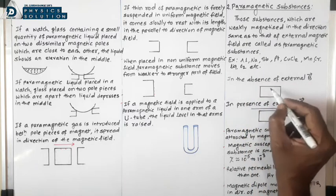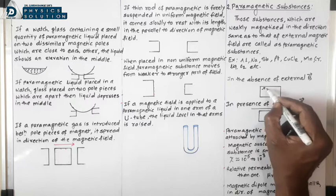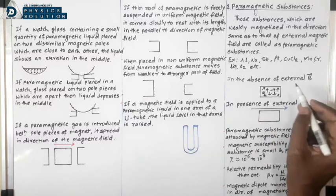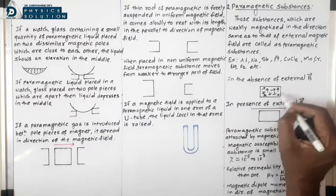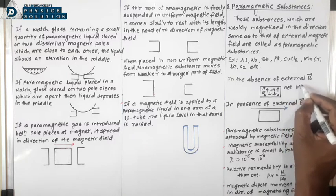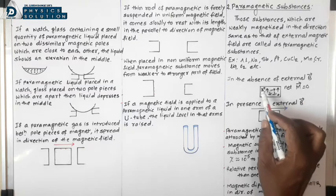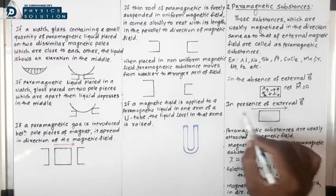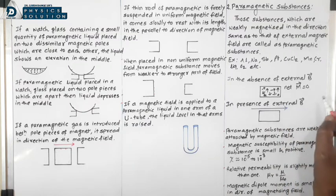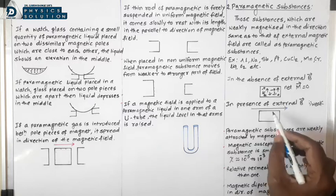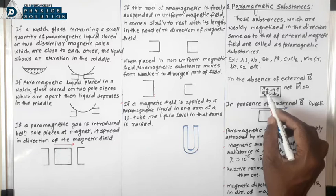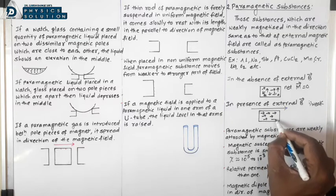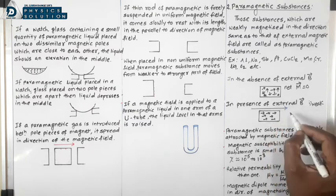In the absence of an external magnetic field, the different atomic dipole moments of a paramagnetic substance are randomly arranged in any possible direction. So the resultant magnetic dipole moment is zero — that is, the net magnetic dipole moment equals zero — and the substance is unmagnetized.